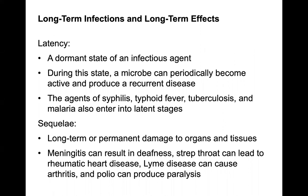Long-term infections include latency — a dormant state of an infectious agent in which a microbe can periodically become active and produce recurrent disease. The agents of syphilis, typhoid fever, tuberculosis, and malaria can enter latent stages. Sequelae refers to long-term or permanent damage to organs and tissues. For example, meningitis can result in deafness, strep throat can lead to rheumatic heart disease, and Lyme disease can cause arthritis. Polio can produce paralysis.